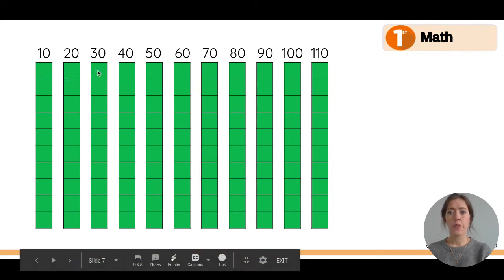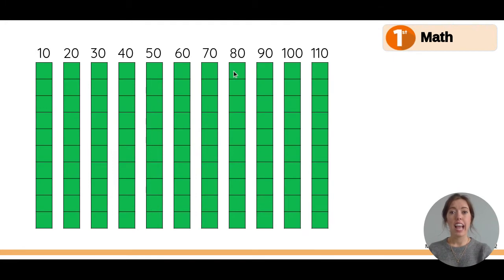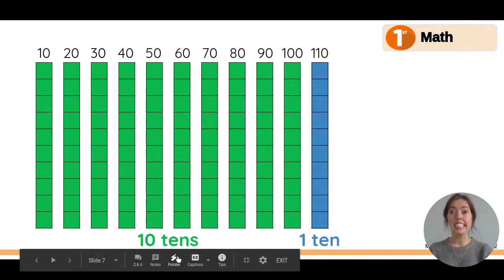1, 2, 3, 4, 5, 6, 7, 8, 9, 10, and then one more 11. Do you remember how many 10 rods are in 100? Yes, there's 10 tens. And then in 110, we have another 10. So 110 is 10 tens plus one more 10.